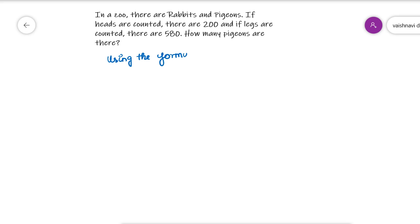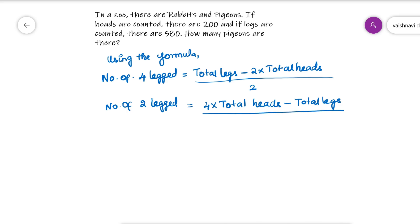We will directly use the formula to solve this. Number of 4-legged creatures equals 4 into total heads minus legs, divided by 2. And number of 2-legged creatures: legs minus 2 into total heads, divided by 2. Just applying all the values here and finalizing, you will find the answer.